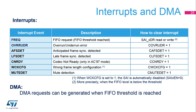Several events can be enabled in order to generate interrupts: the FIFO request event, the overrun/underrun event, the anticipated or late frame synchronization event, the codec not ready event (only in AC-97), and the mute detection event. The WCK-CFG event can be used to inform the user that the frame length of the SAI has been improperly programmed. This feature is only available in master mode.